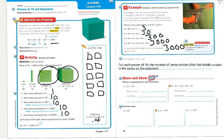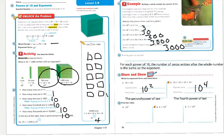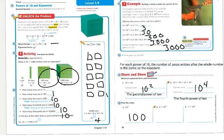Under Share and Show: problem 1 has 10 times 10, which is written as the second power of 10. Problem 2 has 10 times 10 times 10 times 10, so in exponent form it's 10 to the 4th, also known as the fourth power of 10. Now finding the values: the second power of 10 is the same as 10 times 10, which is 100. Problem 4 has 4 times the second power of 10. The second power of 10 is 10 times 10, which is 100, and 100 times 4 is 400.